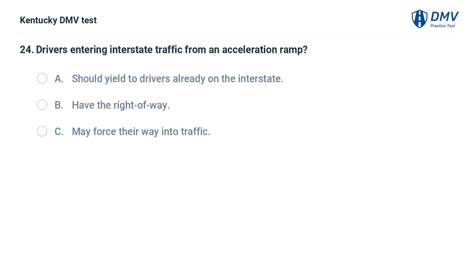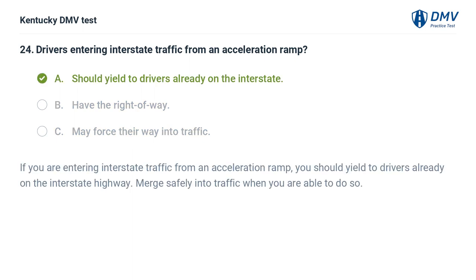Drivers entering interstate traffic from an acceleration ramp: A. Should yield to drivers already on the interstate. B. Have the right of way. C. May force their way into traffic. The correct answer is A, should yield to drivers already on the interstate. If you are entering interstate traffic from an acceleration ramp, you should yield to drivers already on the interstate highway. Merge safely into traffic when you are able to do so.